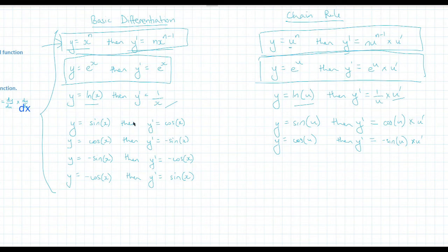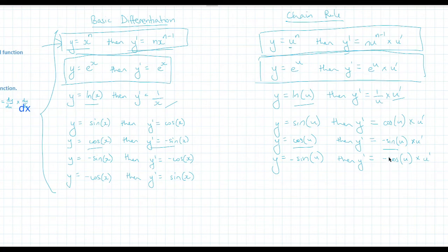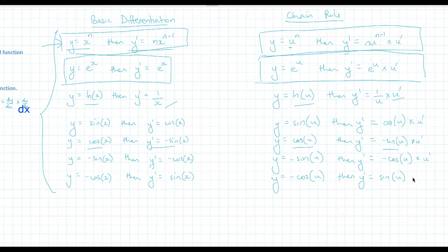Same thing with the trig rules. We know sine x derives to cos x, so sine u would derive to cos u multiplied by u dash. If we had cos x — which derives to negative sine x — then cos u would derive to negative sine u multiplied by u dash. And if we had negative sine u, its derivative would be negative cos u multiplied by u dash. Finally, if the function is negative cos u, then the derivative will be sine u times u dash.